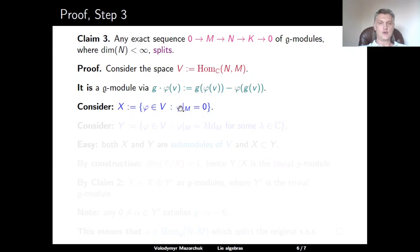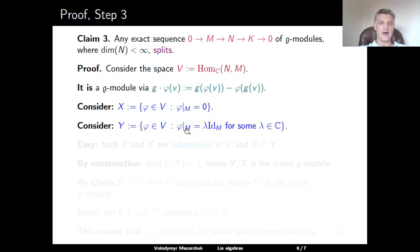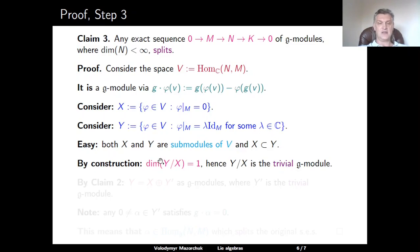Consider two subspaces of V. The subspace X consists of all phi whose restriction to M is zero. Also define Y as the set of all linear maps phi from V such that the restriction of phi to M is a scalar multiple of the identity on M. It is easy to check that both X and Y are submodules of V, and by definition X is a submodule of Y. By construction, the dimension of the quotient space Y/X is 1, because the difference in the definitions of X and Y is a scalar multiple, so the quotient space corresponds to the choice of that scalar.